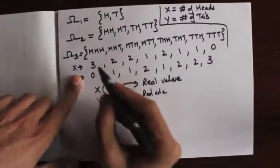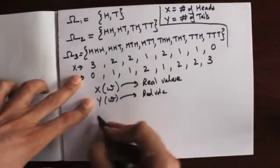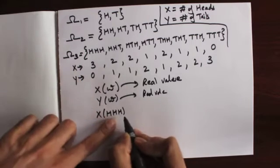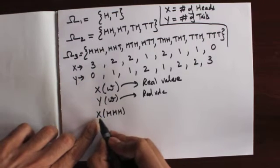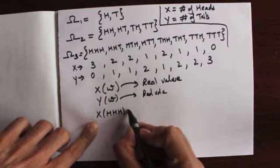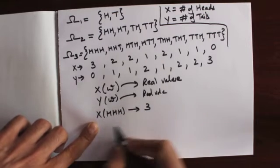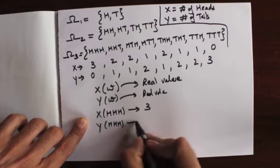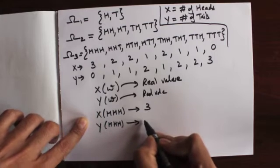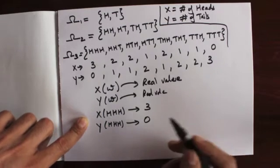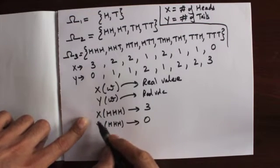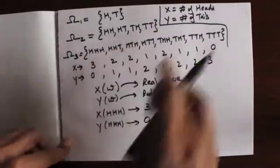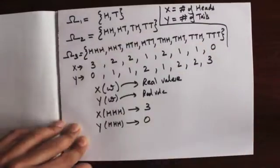For example, X(HHH) equals three — the random variable assigns the outcome HHH a value of three — whereas Y takes the same outcome HHH and assigns it a value of zero. So these two functions both operate on the same sample space but assign different values.